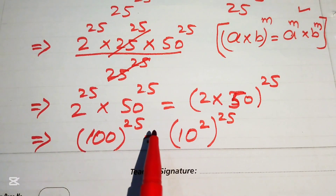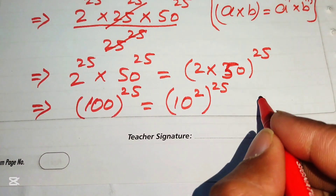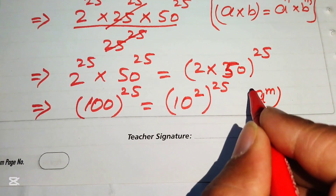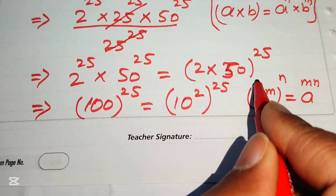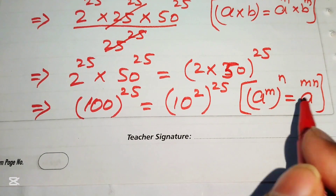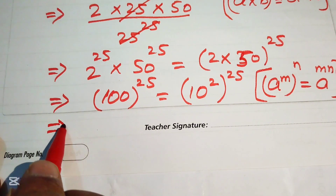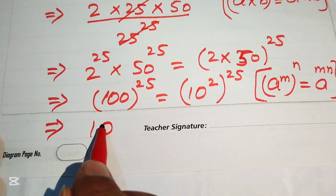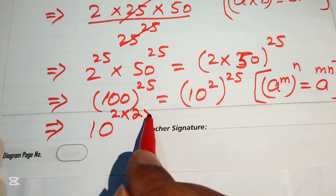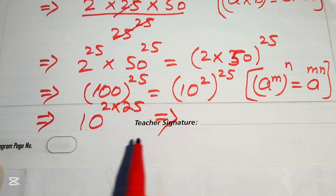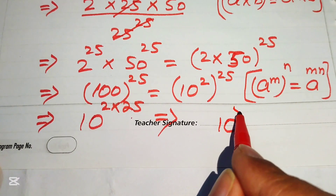We apply the exponent law again: a to the power of m to the power of n equals a to the power of (m times n). So we multiply the two exponents: 10 to the power of (2 times 25). Clearly, 2 times 25 equals 50, giving us 10 to the power of 50.